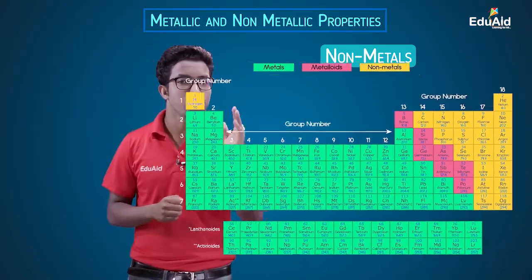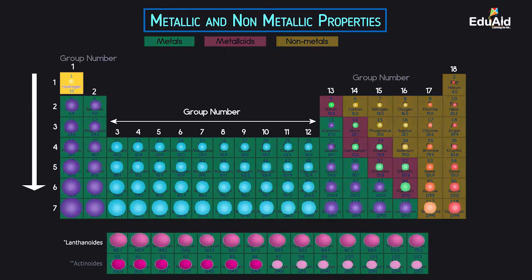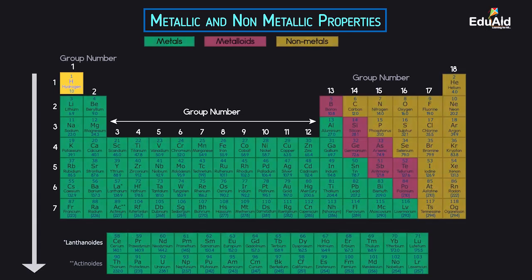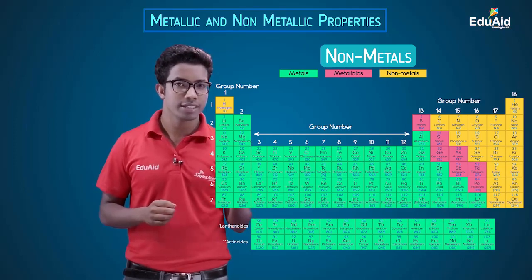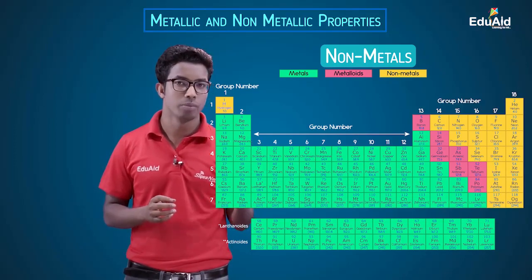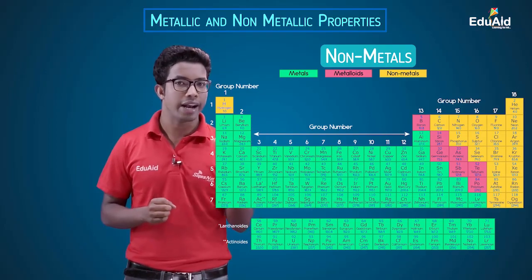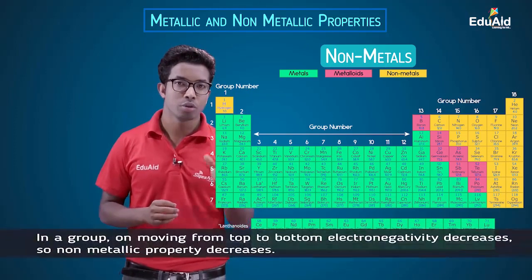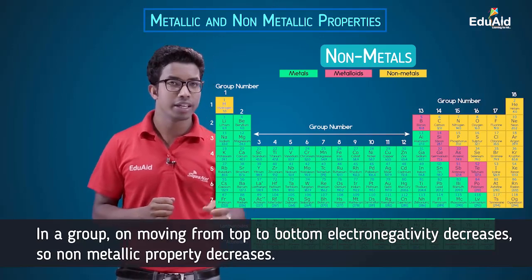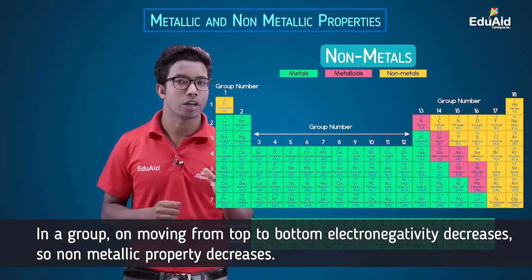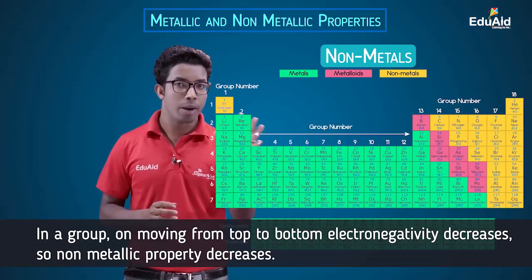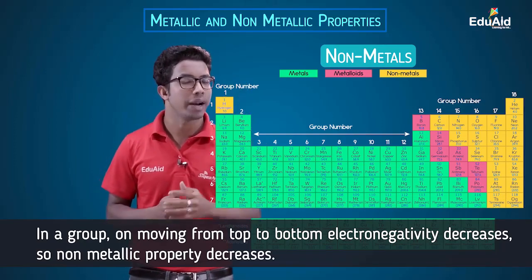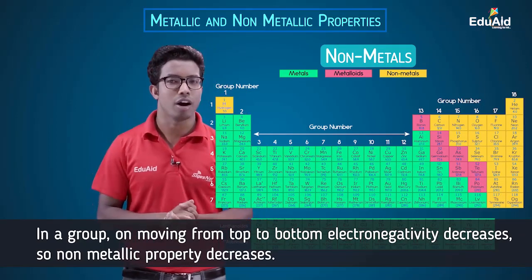In groups, the size of the atom increases from top to bottom, and the effective nuclear charge on the valence electrons decreases. So the tendency of the atoms to gain electrons will decrease, because the outermost electrons are pulled lesser and lesser by the nucleus. Therefore, the electronegativity decreases from top to bottom, and the non-metallic character also decreases from top to bottom in a group.